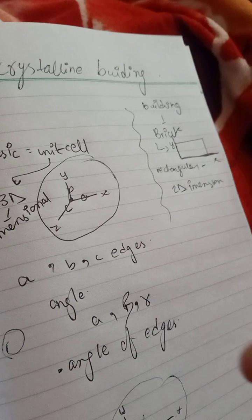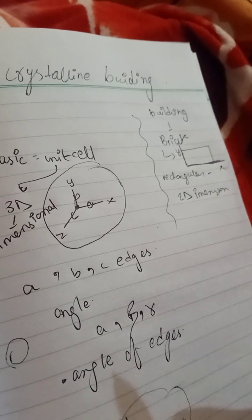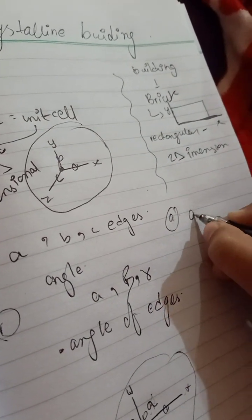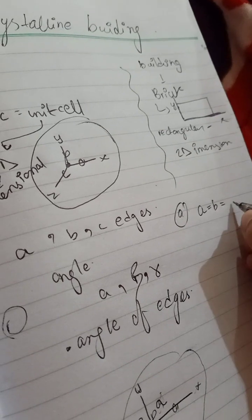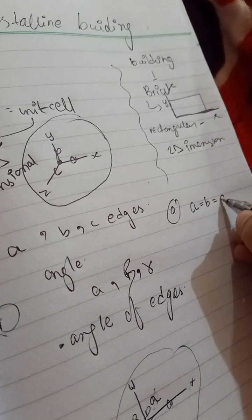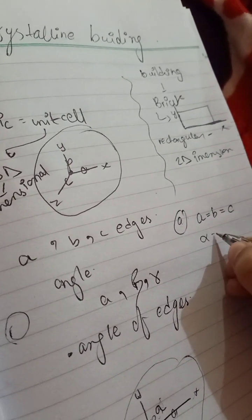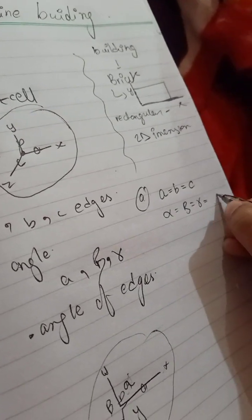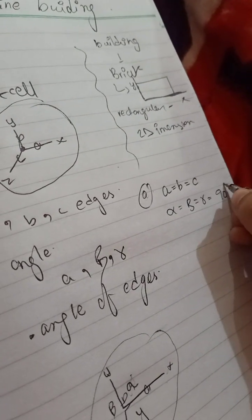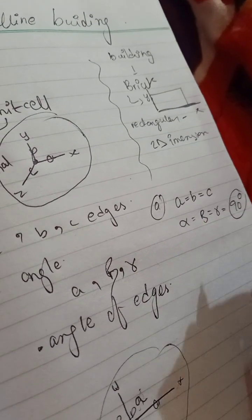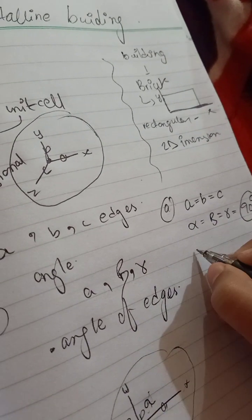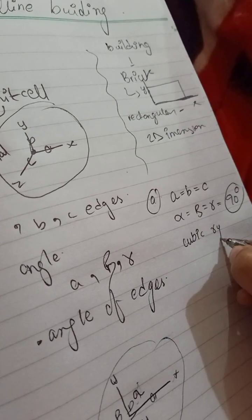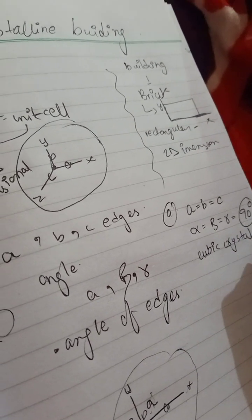Number one: when a = b = c and alpha = beta = gamma = 90°, the structure of the crystalline solid will be cubic. You can take the example of NaCl.